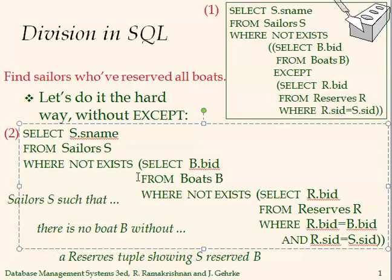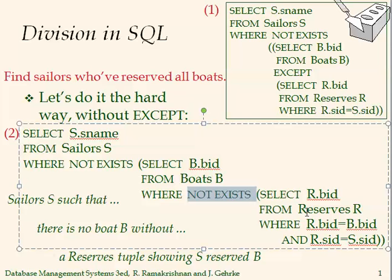There will be multiple ways of implementing these queries, but I want to be consistent in using the nested query with the double NOT — NOT EXISTS. For example, I want to select sailors' names such that there isn't a boat such that there isn't a reservation for that boat made by that sailor. This implies he has reserved all those boats. That is how we implement division.